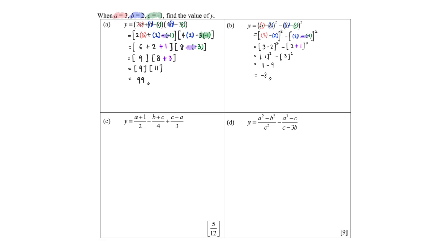For part c, again substituting all the a, b, and c values in. This part is slightly tricky. a will be 3, plus 1 over — the whole thing is over 2 minus my b, which is 2. Plus negative 1, the whole thing over 4 plus my negative 1, minus 3 over 3. And then this will give me...